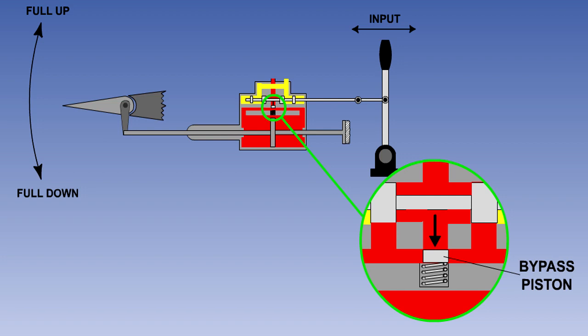Each powered flying control unit has a bypass piston fitted, which is normally held closed by hydraulic pressure. Should a hydraulic system fail or be taken offline by the pilot, then the drop in hydraulic pressure will allow the spring loaded piston to open the bypass channel and so break the hydraulic lock in the actuator.